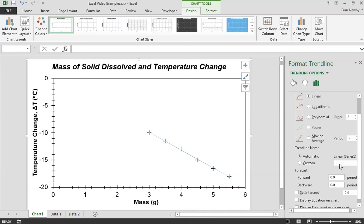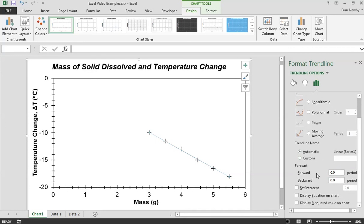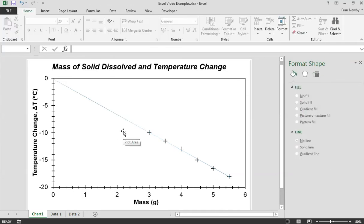There's a few other options. We can name our trend line if we really want to. We can forecast forward or back, so that's sort of extrapolation. Let's say I wanted to forecast backwards - currently my minimum mass is 3 grams. Let's say I want to forecast backwards 3 grams, then I can go back there to where that trend line is going to cross.